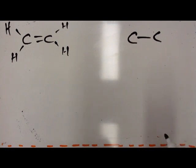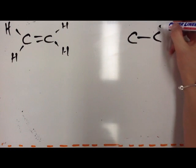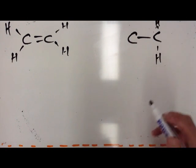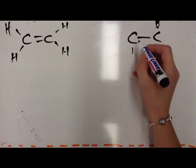Next, draw the groups around your carbons. So on this carbon, we have two hydrogens, so I'm going to draw two hydrogens. On this carbon, there's also two hydrogens, so I'm going to just draw those.